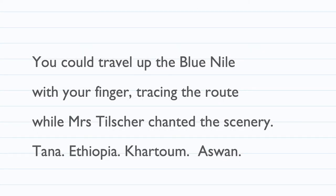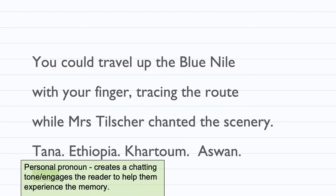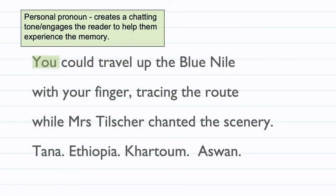The first part of the poem says: 'you could travel up the Blue Nile with your finger tracing the route while Mrs Tilscher chanted the scenery. Tana, Ethiopia, Khartoum, Aswan.' The first part you're going to highlight is the word 'you.' This is a personal pronoun. Personal pronouns create a chatting tone and engage the reader to help them experience the memory.